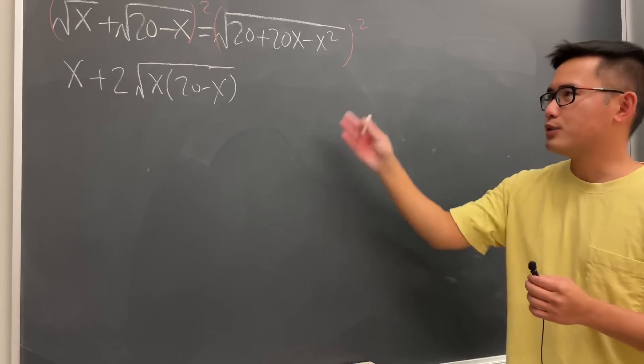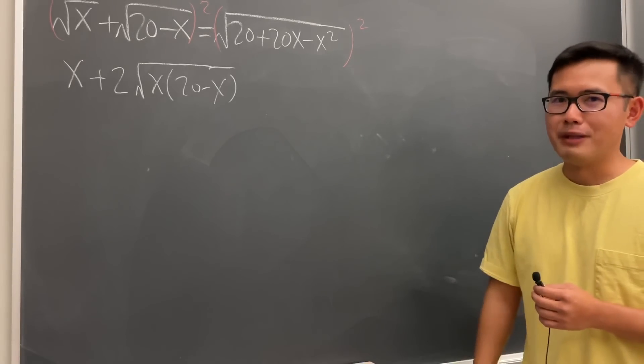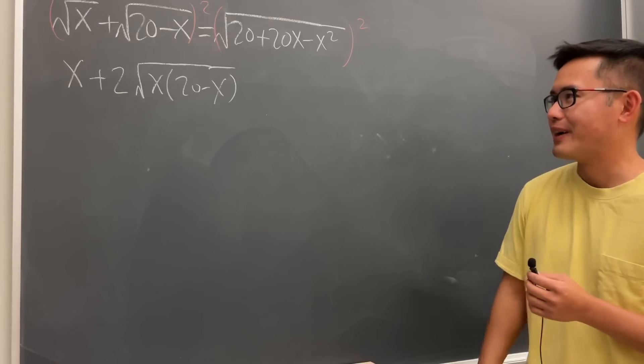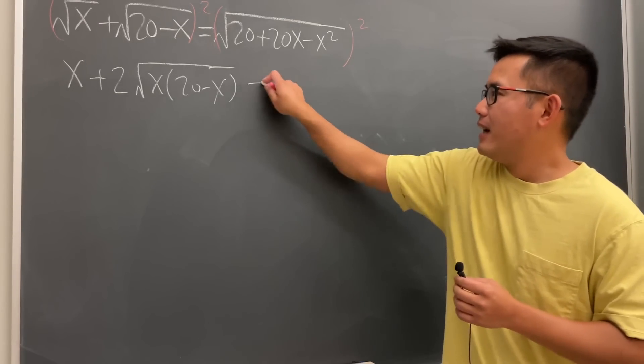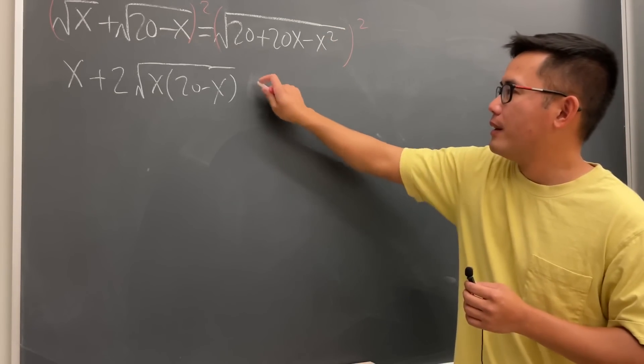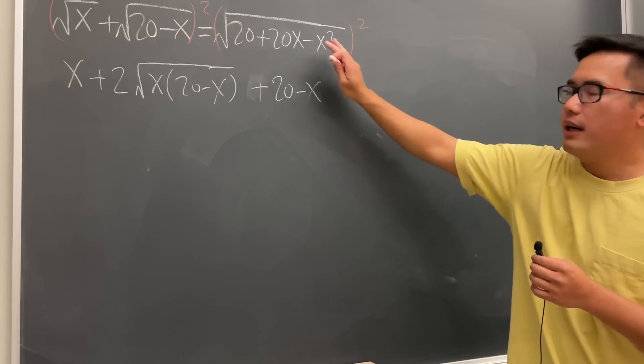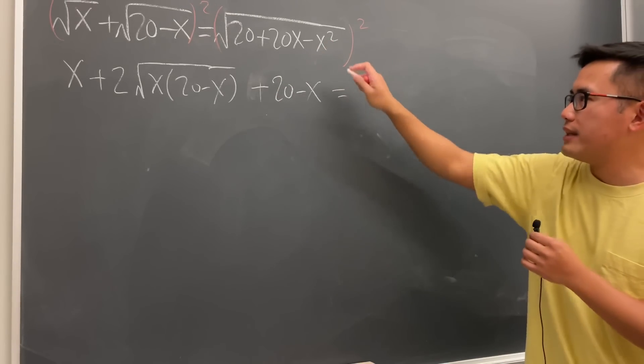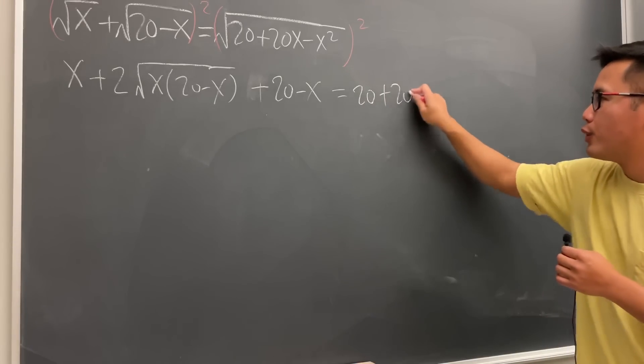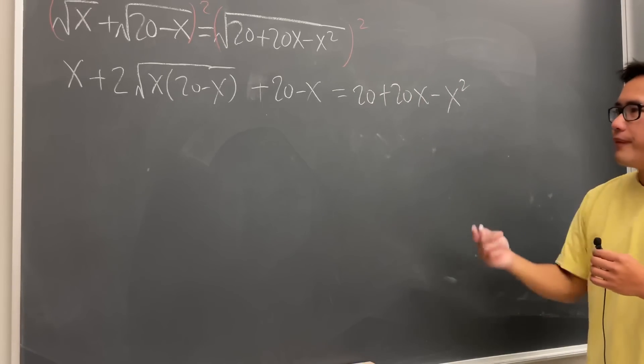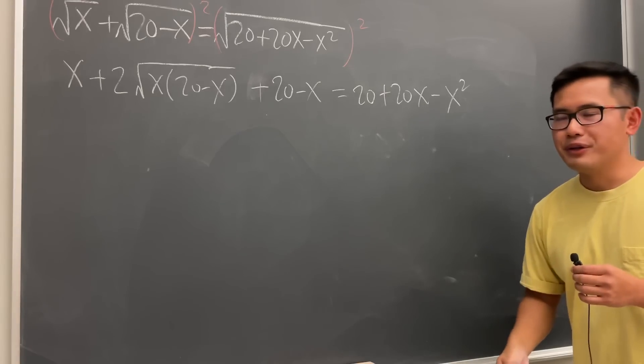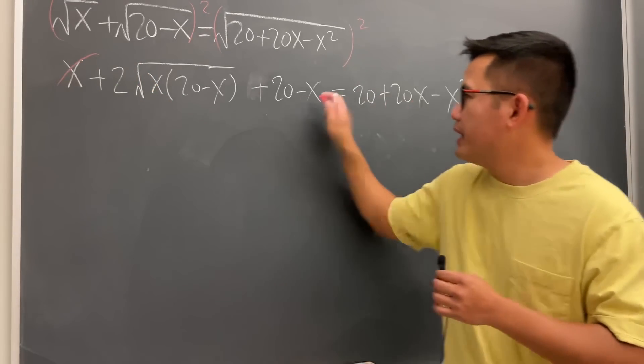Now, I'm just going to solve it because when you square both sides at the end, we better solve it. We better check the answer anyway. And then the right-hand side is nice. Oh, sorry. Add this thing squared, which is 20 minus x. And then for this right here, I'm just going to write inside 20 plus 20x minus x squared. Cool. Very good.